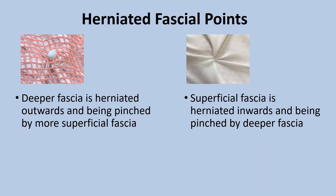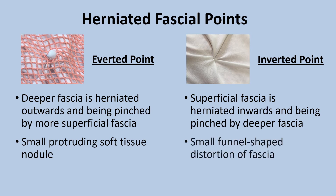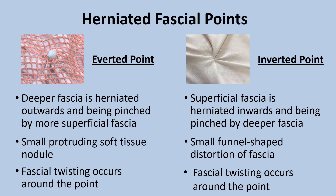When the deeper fascia is herniated outwards and being pinched by a more superficial fascia, I call it an everted point, and when instead the superficial fascia is herniated inwards and being pinched by deeper tissue, I call it an inverted point. The everted points feel like a nodule of soft tissue that is only a few millimeters diameter at most, while the inverted points feel like a small funnel-shaped distortion of fascia tethered to a deeper point. Around both of these types of points the fascia is twisted clockwise or counterclockwise. This twisting around the central point is specific to these herniated points and is not something you will feel with a Chapman, a counterstrain, or a trigger point, unless there happens to be a herniated point at the same location as one of these other active points.